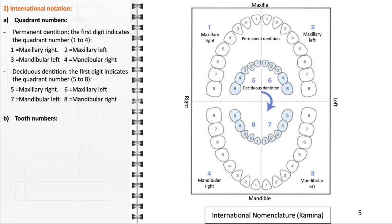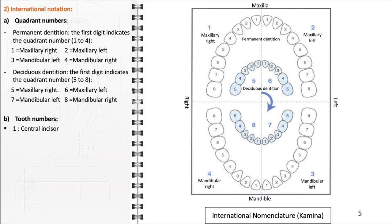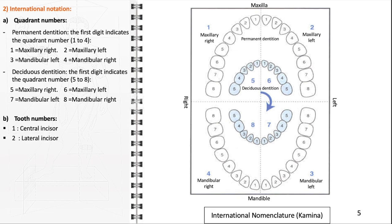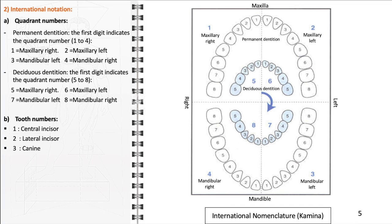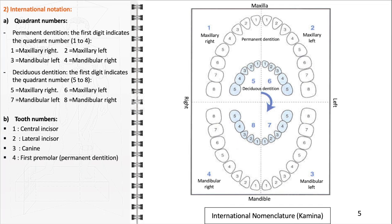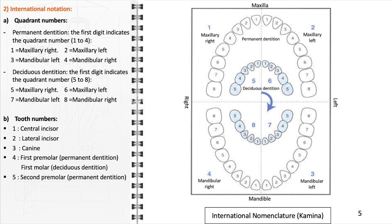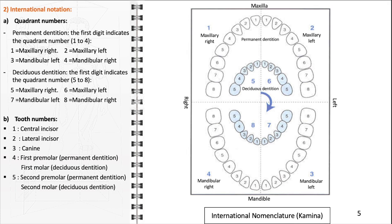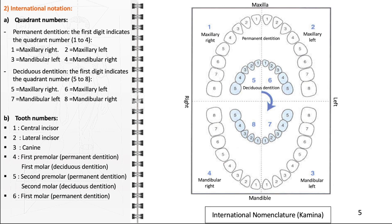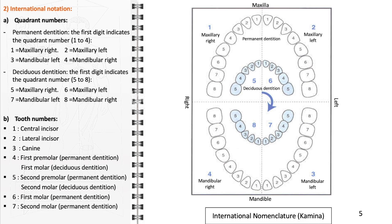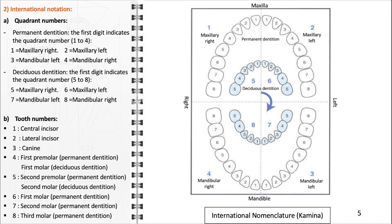Regarding tooth numbers within these quadrants, number one denotes the central incisor, two is for the lateral incisor, three identifies the canine, four refers to the first premolar in permanent dentition and the first molar in deciduous dentition, and five stands for the second premolar in permanent dentition and the second molar in deciduous dentition. In permanent dentition exclusively, six is the first molar, seven is the second molar, and eight is the third molar, known as the wisdom tooth.